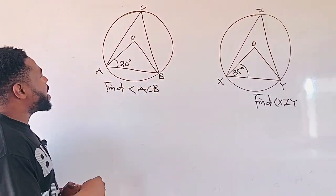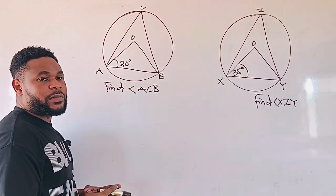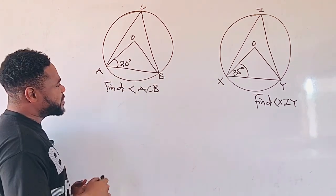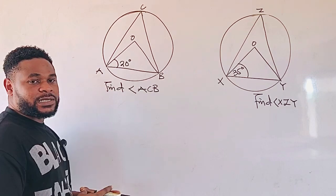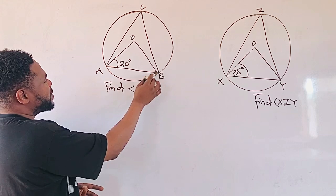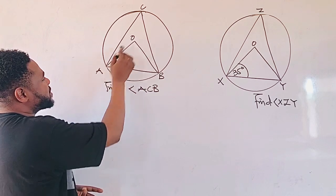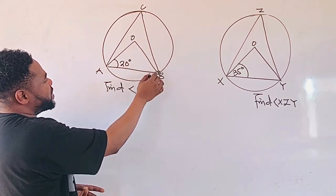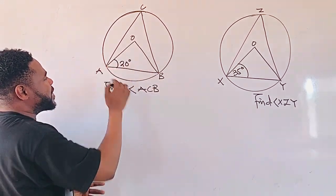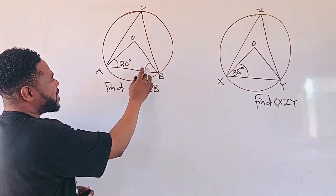We want to look at how we can find angle ACB in this diagram. From the question, we have been given the angle at A to be 20 degrees. There is a property in the circle theorem which states that any time a chord, let's say AB, creates an angle at the center of the circle, we form an isosceles triangle because OB is equal to OA — in the sense that OB and OA are radii. And base angles of an isosceles triangle are equal.